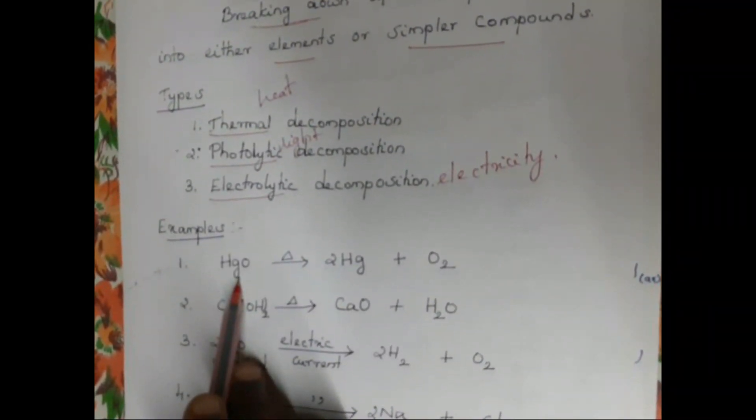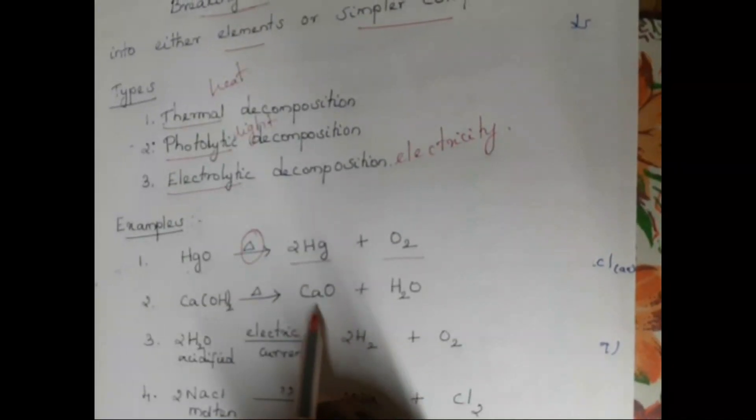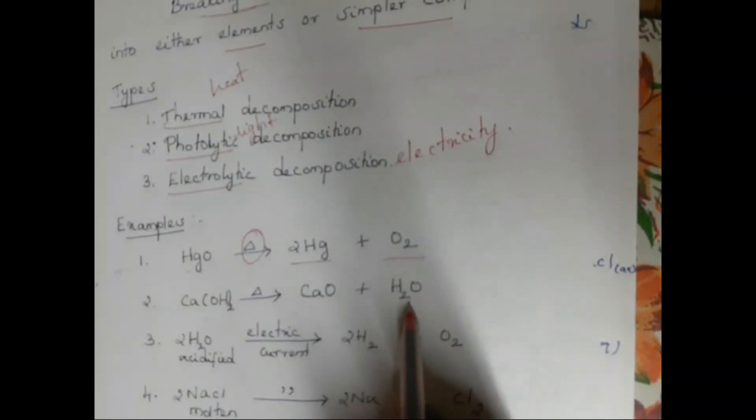Let us see a few examples. First, HgO — mercuric oxide — on heating undergoes thermal decomposition. It breaks down into mercury and oxygen. Here, both products we got are elements.